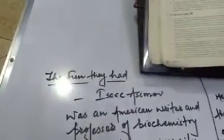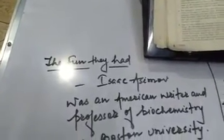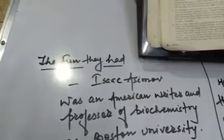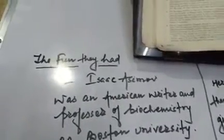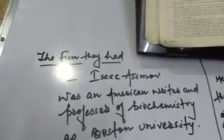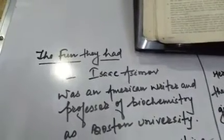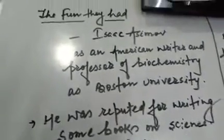Hello everyone, today we are going to discuss the first chapter of standard ninth, 'The Fun They Had,' which is written by Isaac Asimov. Isaac Asimov was an American writer and professor of biochemistry at Boston University. He was reputed for writing some books on science fiction.